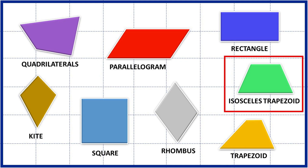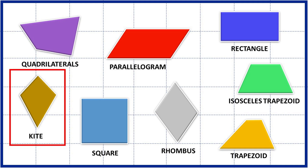An isosceles trapezoid is a convex quadrilateral with a line of symmetry bisecting one pair of opposite sides. It is a special case of a trapezoid. A kite is a quadrilateral which has two pairs of sides; these pairs are of equal length and they are adjacent to each other.